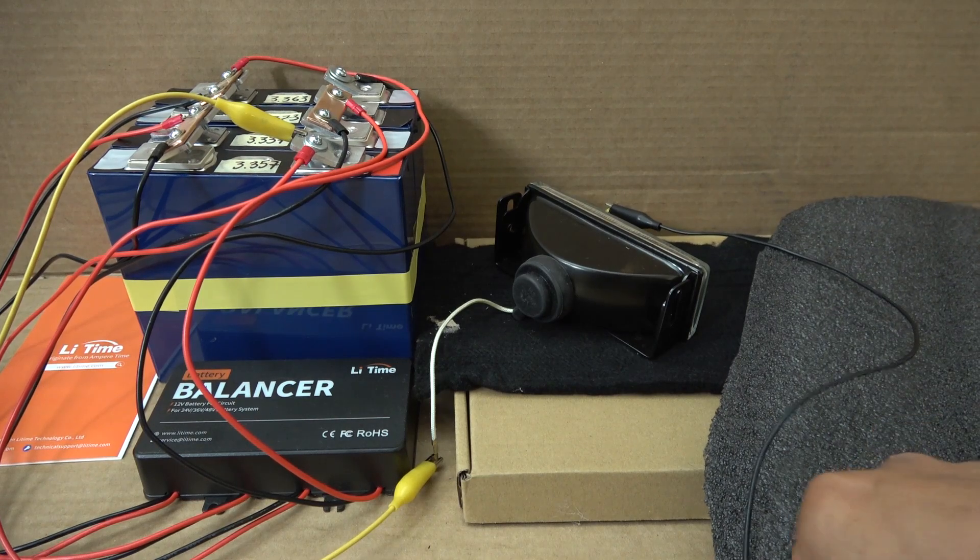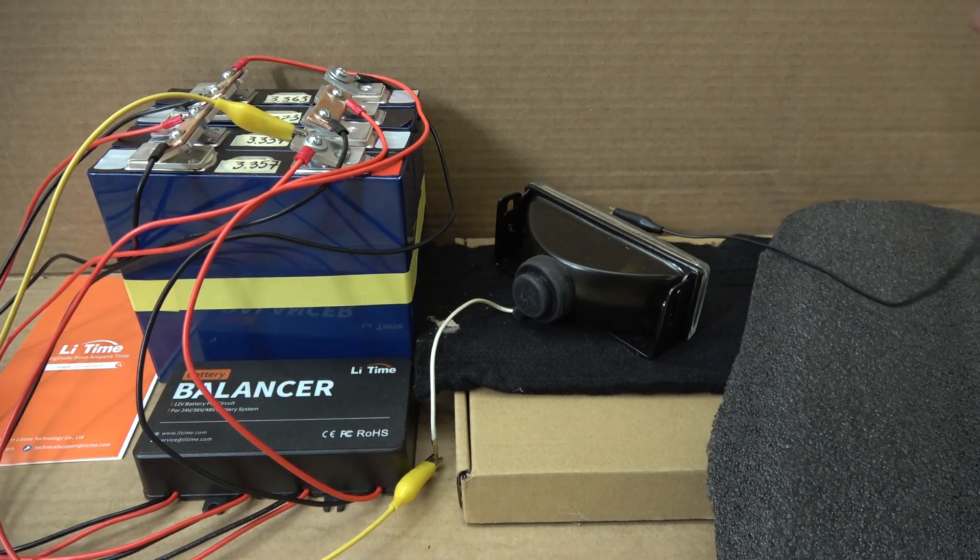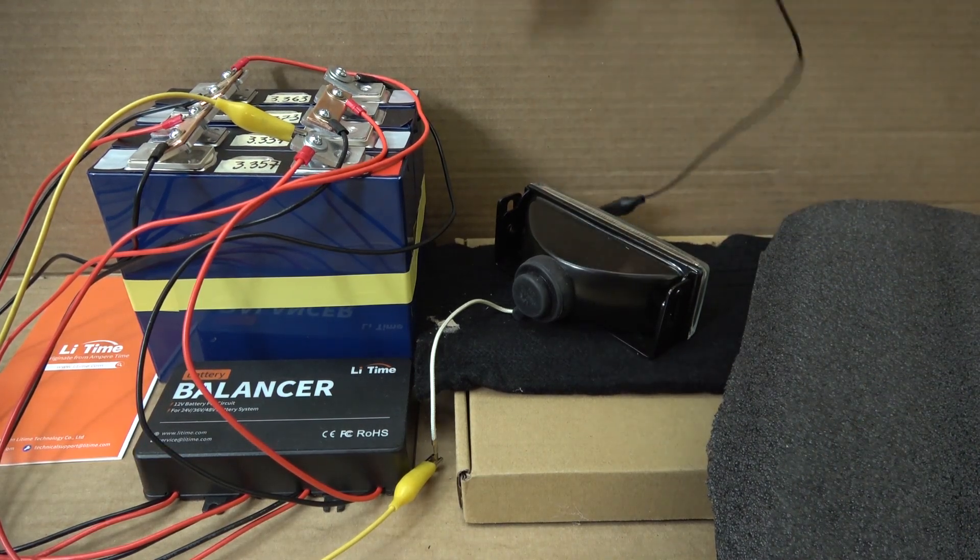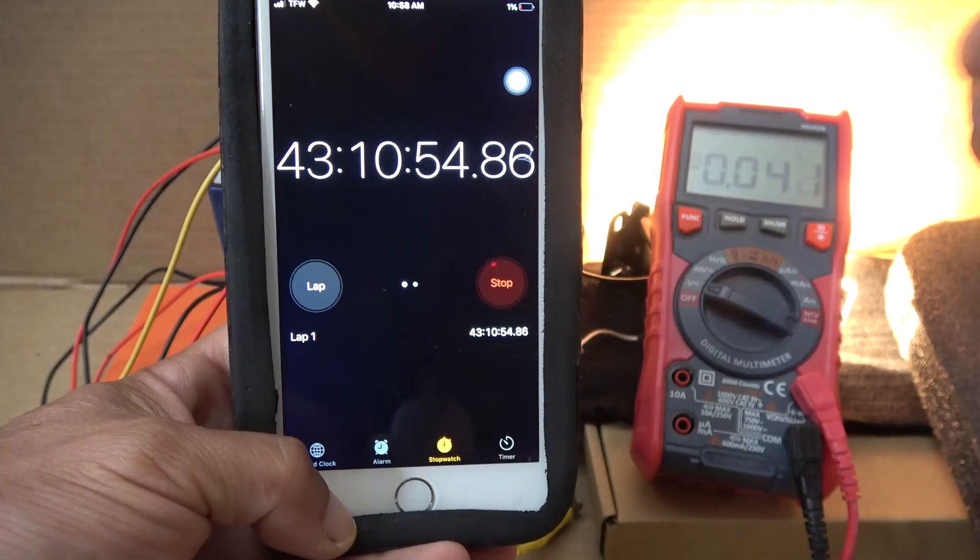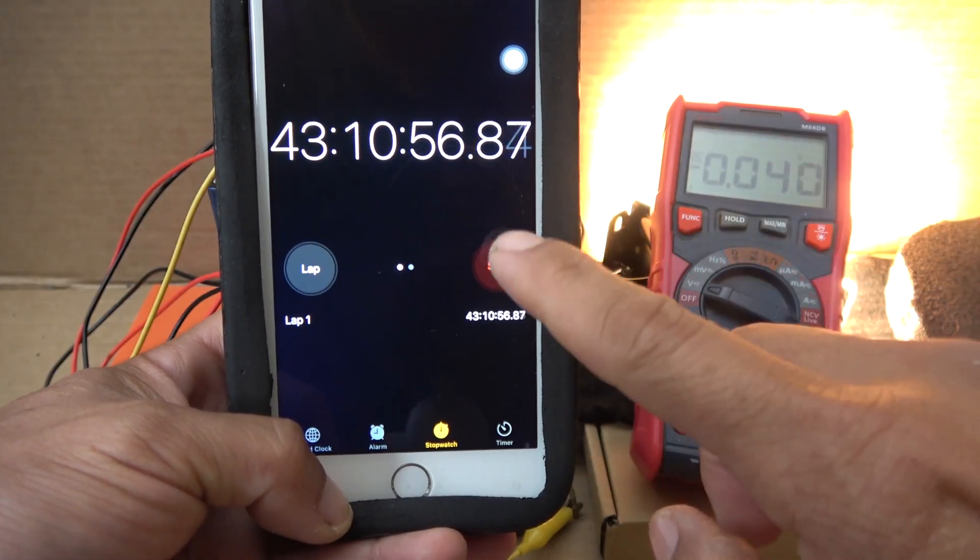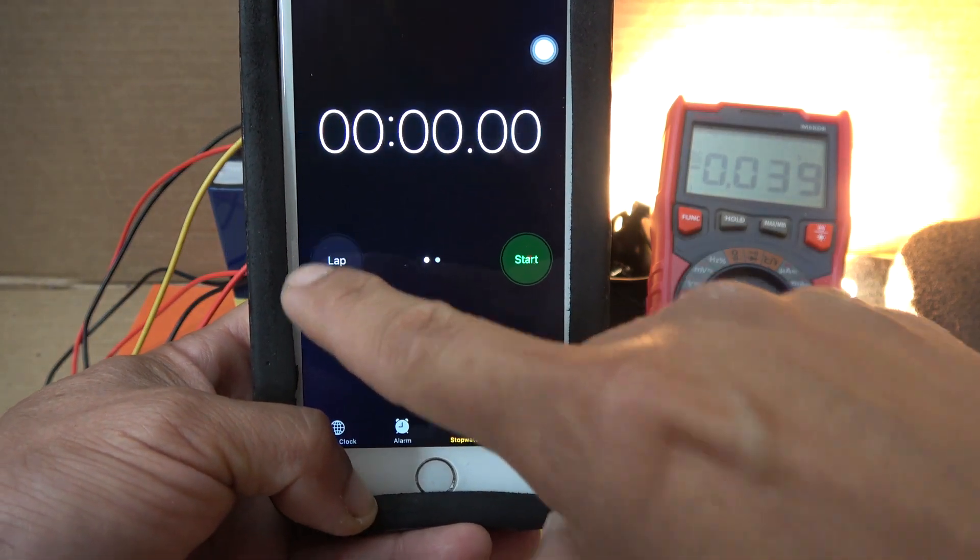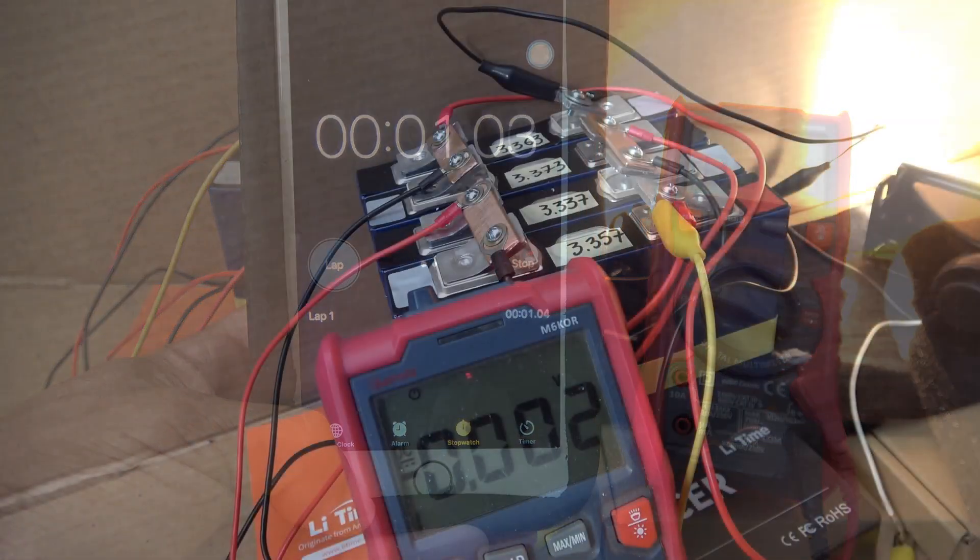I want to try a load test to see how this balancer works under load. I got this light bulb here, and it runs at about 7 amps. I'm going to let this run for a while, so let's put a timer on it, let's reset this, start.